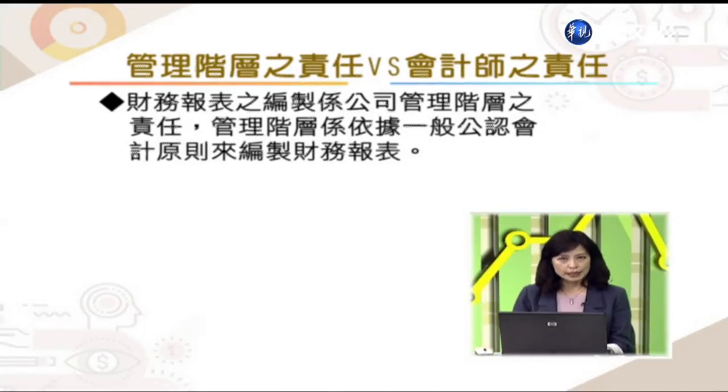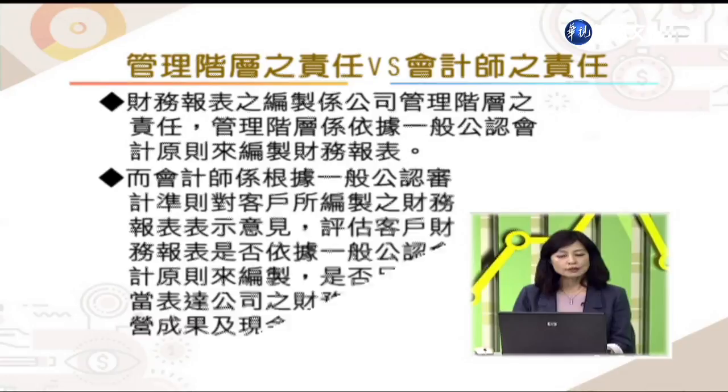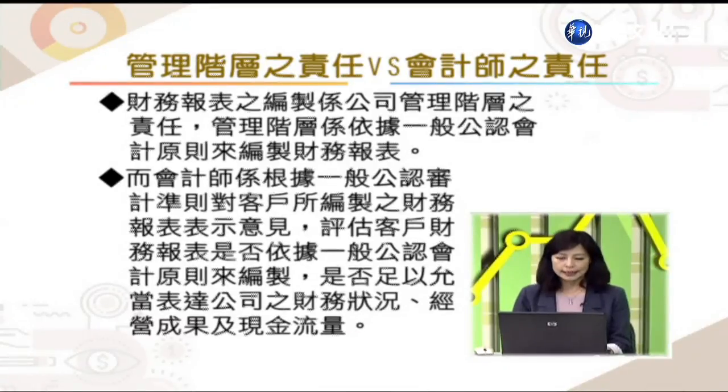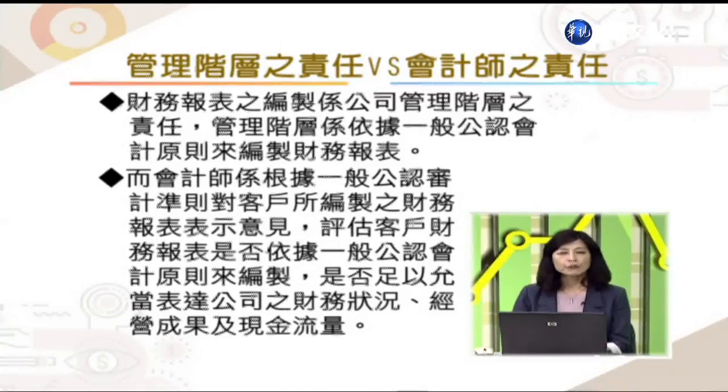查核意见报告书中要区分管理阶层的责任与会计师的责任。很多不熟悉会计师查核业务的使用者会误以为财务报表是会计师编制的，实则不然。财务报表编制是公司管理阶层的责任，管理阶层依据一般公认会计原则来编制；会计师则根据一般公认审计准则，对客户财务报表是否依据一般公认会计原则编制、是否允当表达财务状况、经营成果与现金流量表示意见。